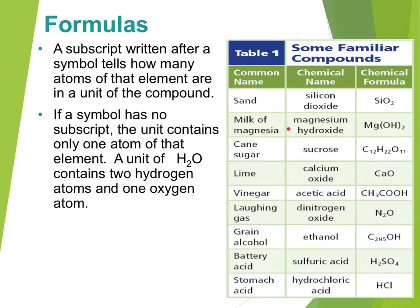In the case of milk of magnesia, we have an OH in parentheses. This gets distributed to everything in the parentheses like it would in math. So there's one magnesium, two O's, and two H's. It's written like this because of how the atoms are actually bonded together, but we're not going to worry about that right now.